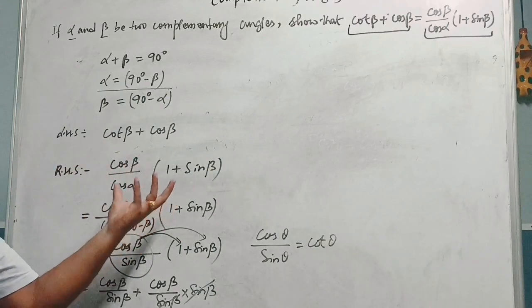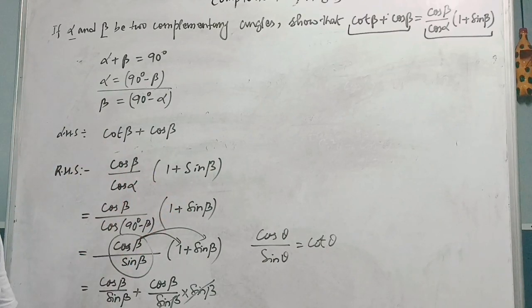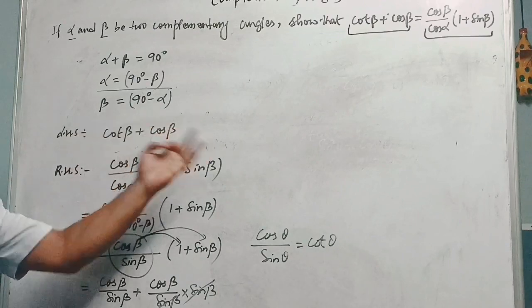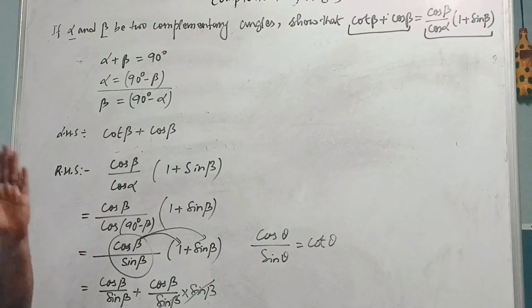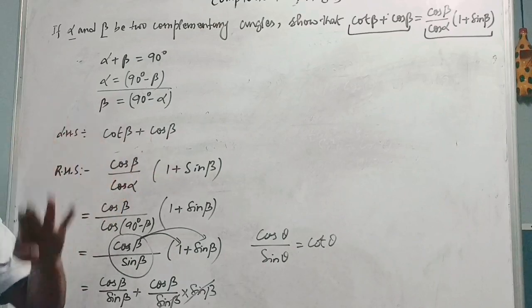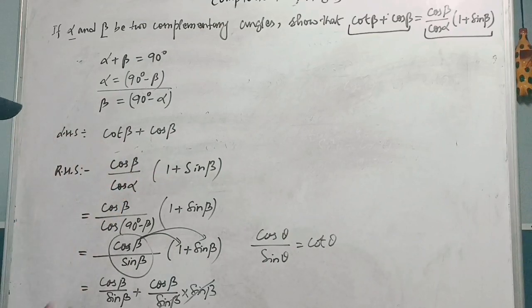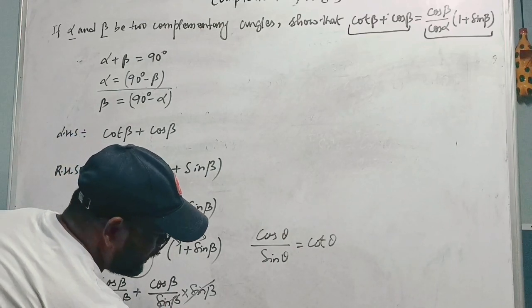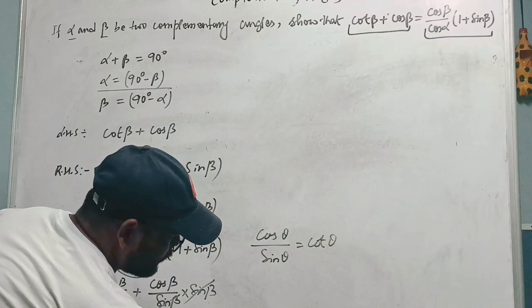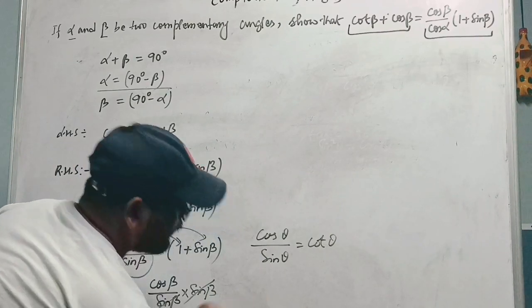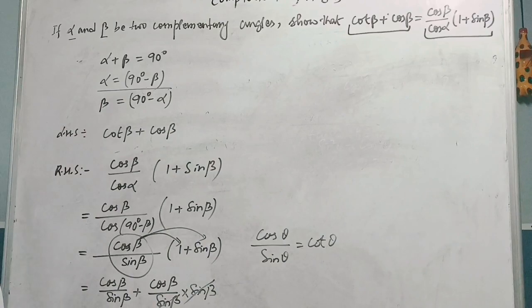This is the way you are supposed to solve any type of question from complementary angles — it is very simple. In this chapter, questions involve two angles. Whenever you start solving, first focus on making all the angles identical. In the end, you write LHS equals RHS. Clear, everyone?